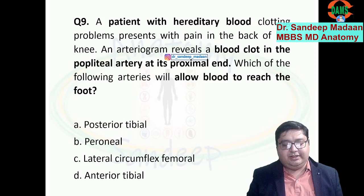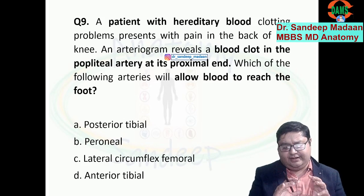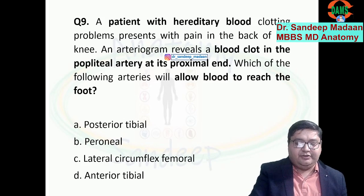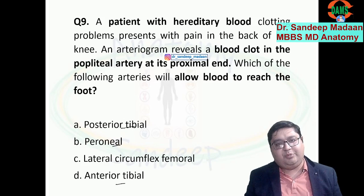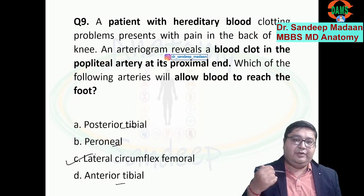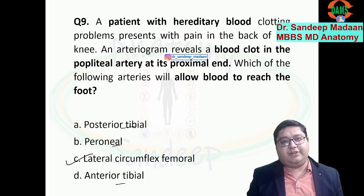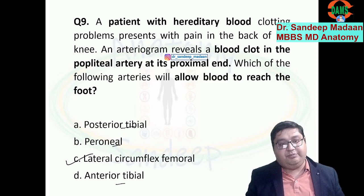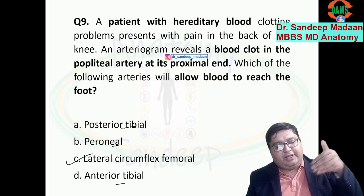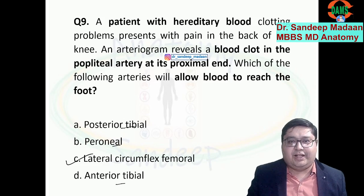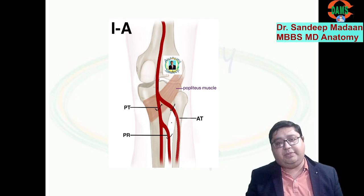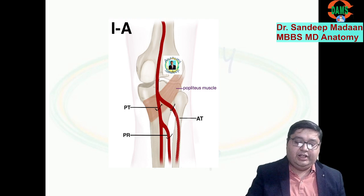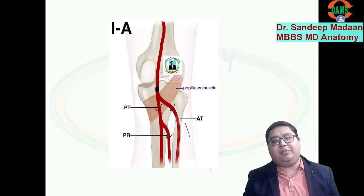Next question: the patient shows a clot in the popliteal artery. This is a logical question. The popliteal artery gives these branches: anterior tibial, posterior tibial, and peroneal. If the popliteal artery is blocked, all three will be automatically blocked. The answer will be lateral circumflex femoral, which is a branch of the profunda femoris artery. It makes an anastomosis and through that anastomosis will somehow maintain the collateral circulation.